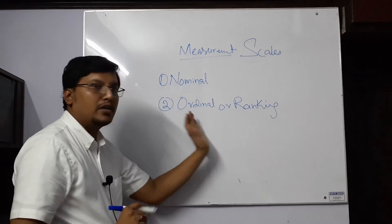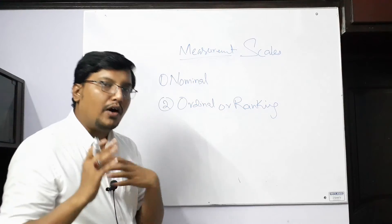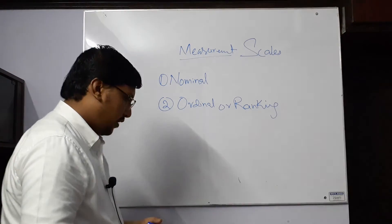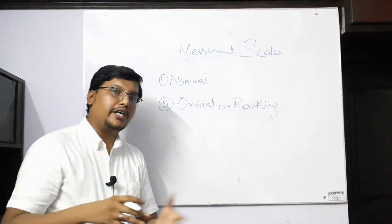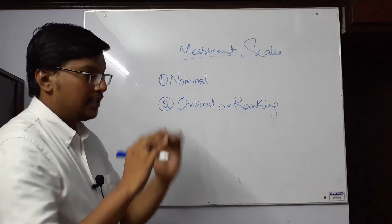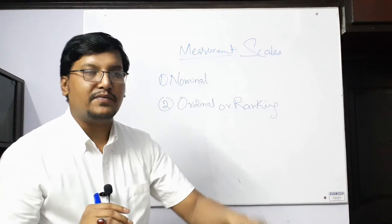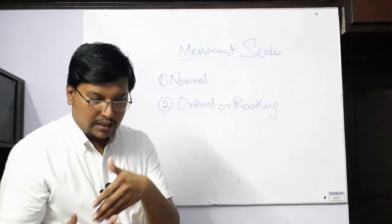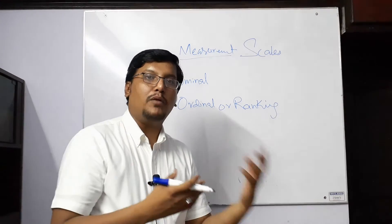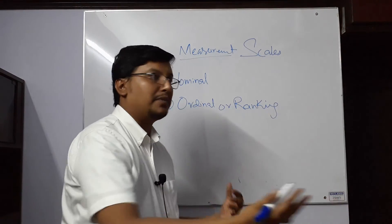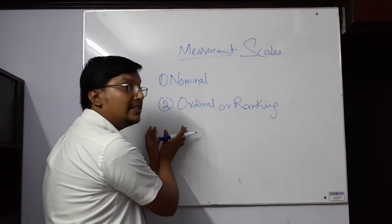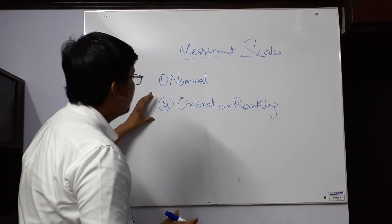The second scale is ordinal. Ordinal is a very self-explanatory word — it means orders. Wherever we find data in the shape of orders, it is called ordinal data. For example, the grade of a government employee in a specific institution or department, or grades received by students in a specific class, or competition rankings — first place, second place, fourth place. These are orders, these are ranks. This type of data belongs to the ordinal scale.